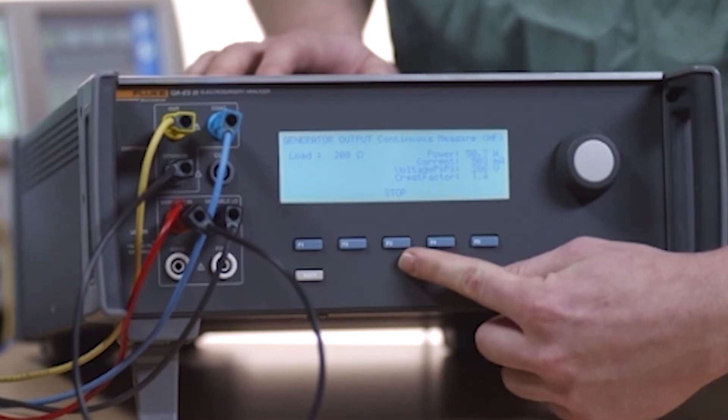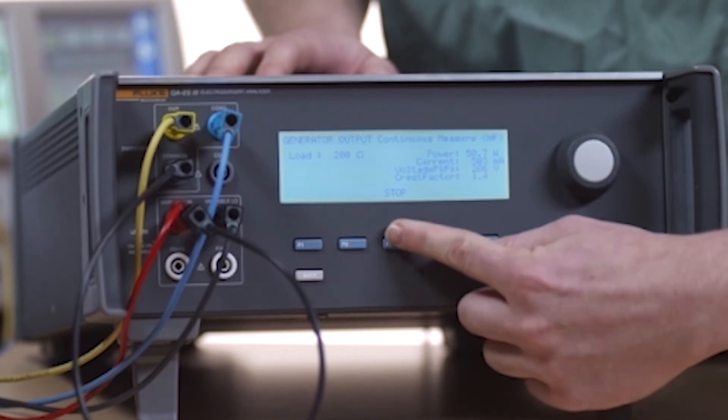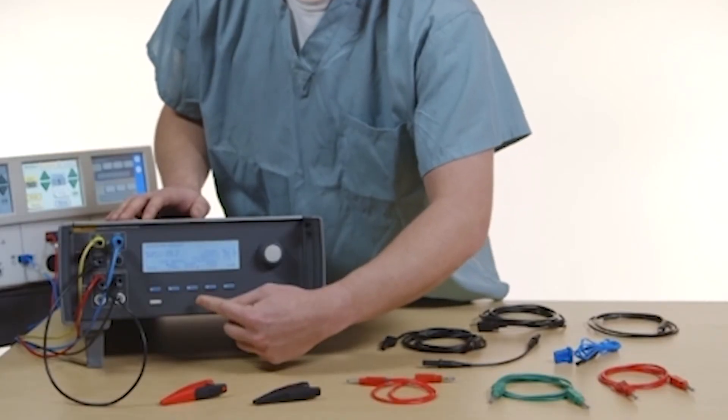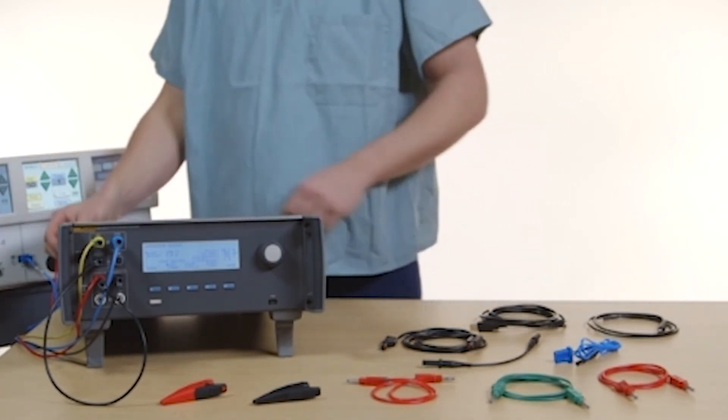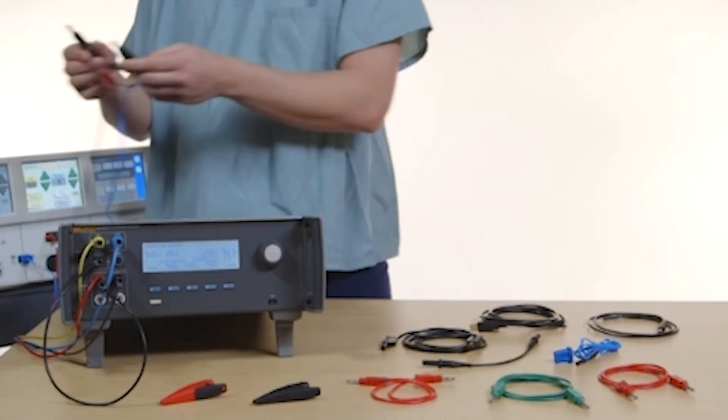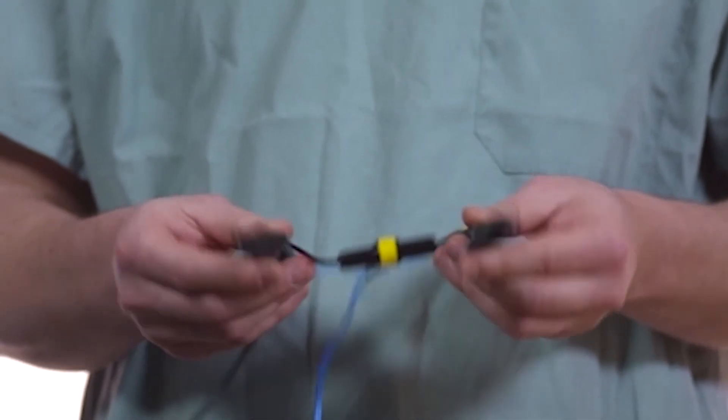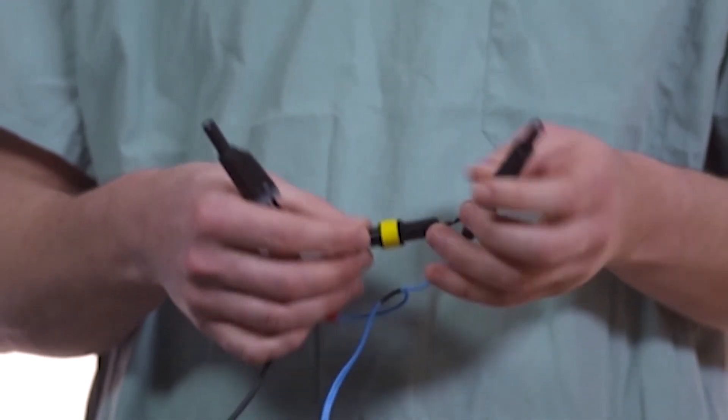Note, the ESU remains on and the footswitch is engaged until you stop the measurement. ESUs with CQM alarms have two neutral connections. You must connect the neutral connections together for generator output, vessel sealing, and HF leakage measurements.